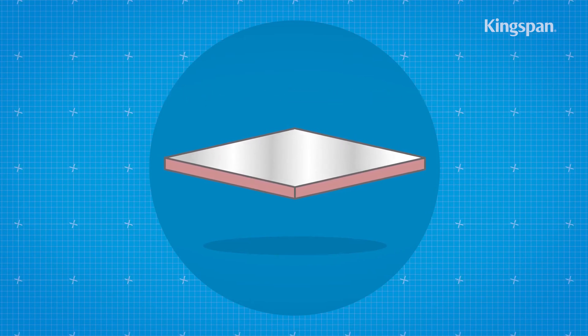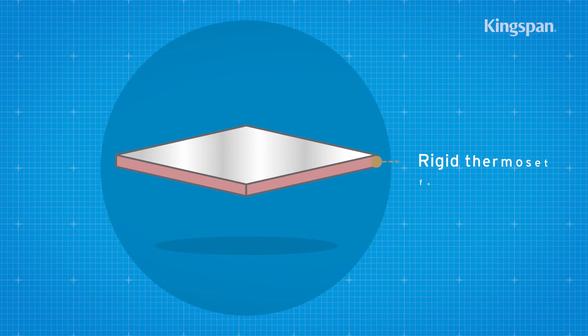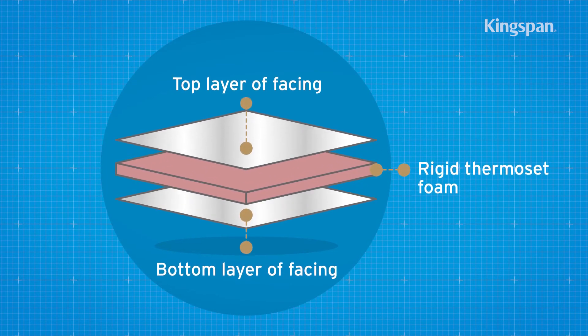It is made through a manufacturing process in which a rigid thermoset foam forms an insulating core between two facing elements.